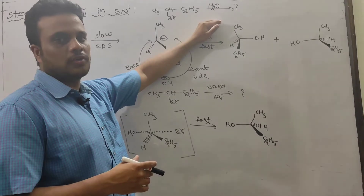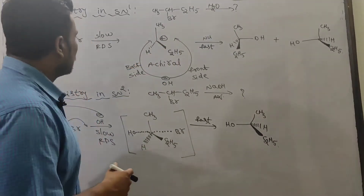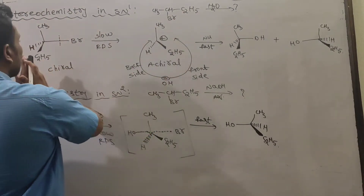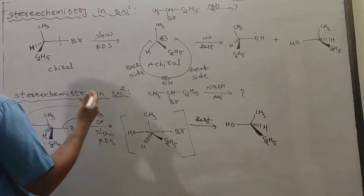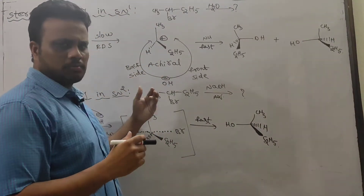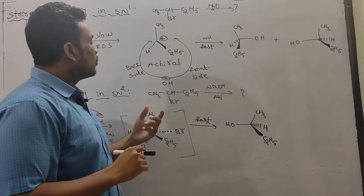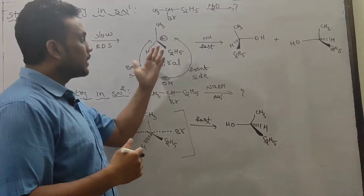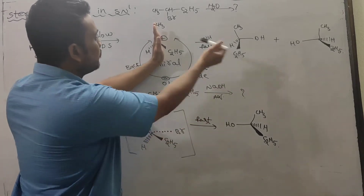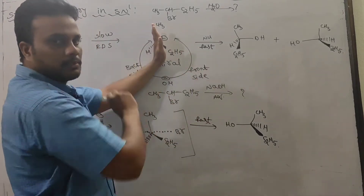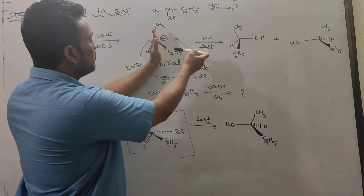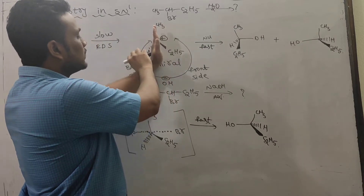In SN1 mechanism, a weak nucleophile is present and a polar protic solvent acts as the nucleophile — this is direct solvolysis. Carbocation formation takes place easily, and bromide is the leaving group. This carbocation is achiral because it is planar, so when the nucleophile approaches, it can attack from the front side as well as from the back side.